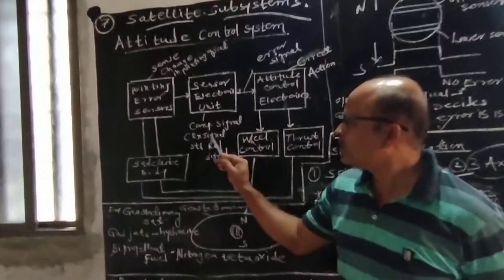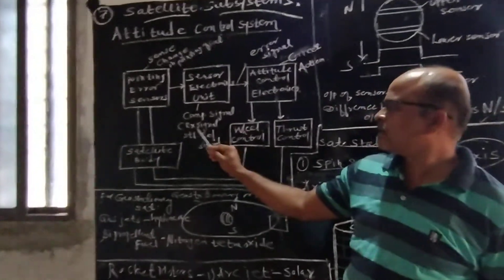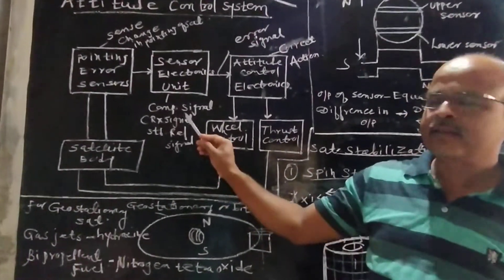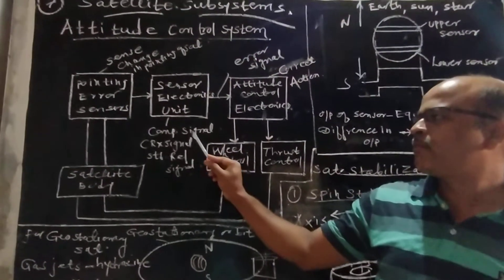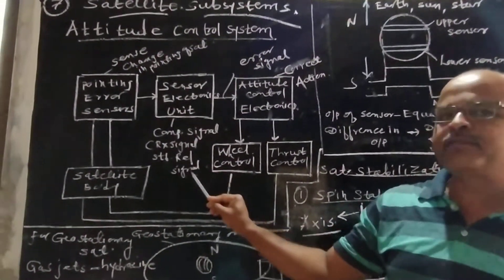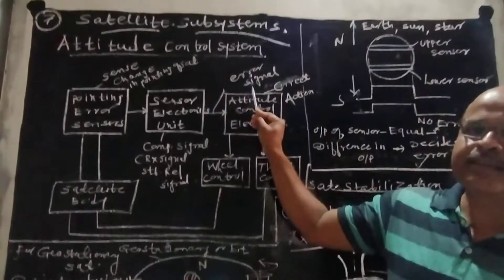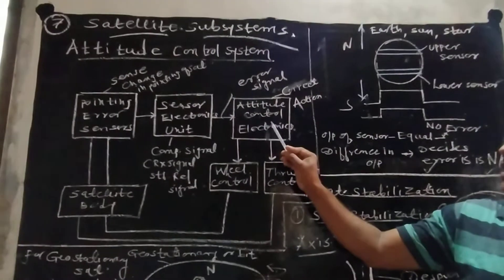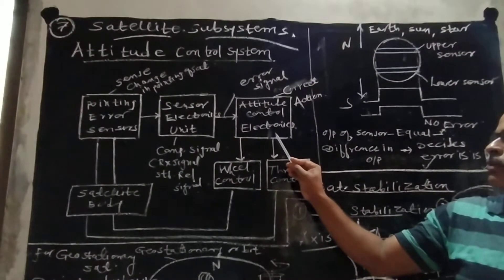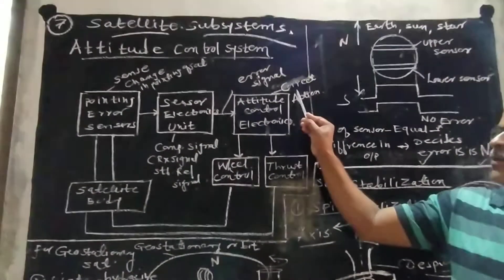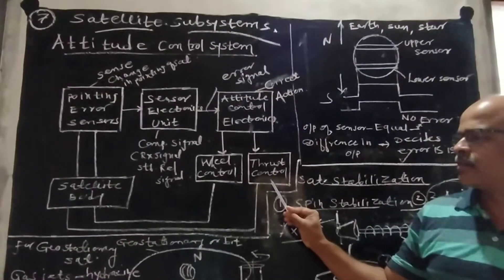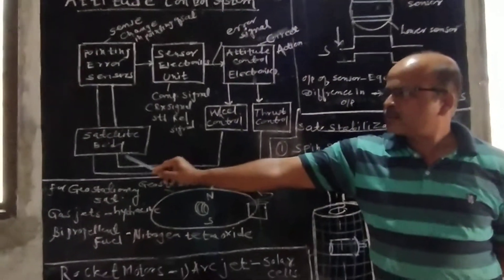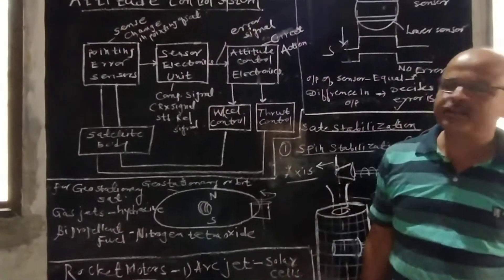The sensor electronic unit compares the received signal with the standard reference signal. When we compare the received signal with the standard reference signal, an error signal is generated. This error signal is given to the Attitude Control Electronics. The Attitude Control Electronics provides the corrective action with the help of field control and thrust control, and this corrective action is given to the satellite so that satellite attitude is controlled.